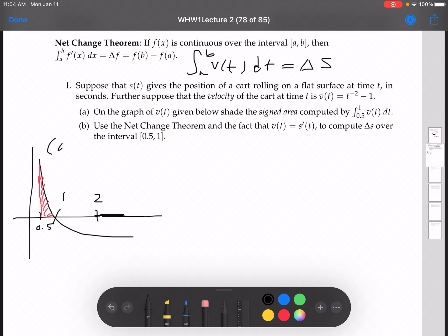So this is part A here. For part B, we want to compute the change in s. This is the integral from 0.5 to 1 of v(t). So that's t to the negative 2 minus 1 dt.